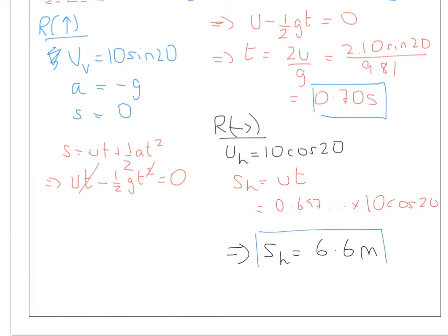So the range of your cannon in the horizontal direction is 6.6 metres there. And that's the first part. So we've got the time it takes to return to ground here, and we've got the horizontal displacement, the range of your cannon. So that's how far away, essentially, the ball would hit the ground.